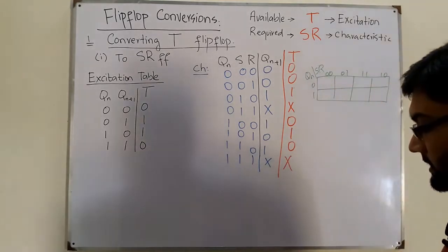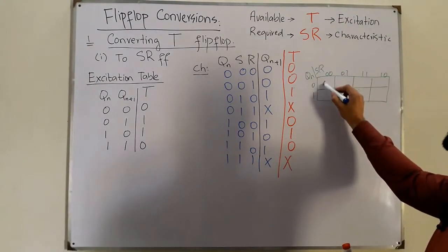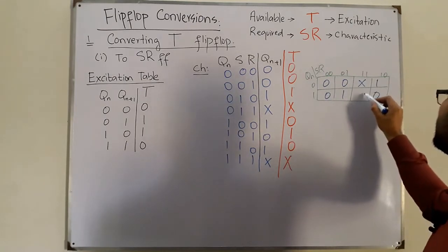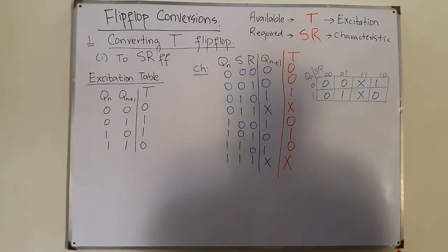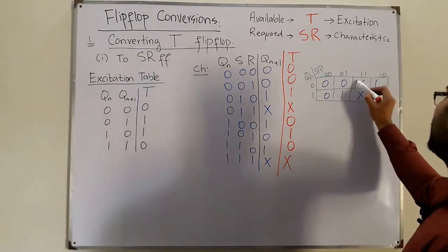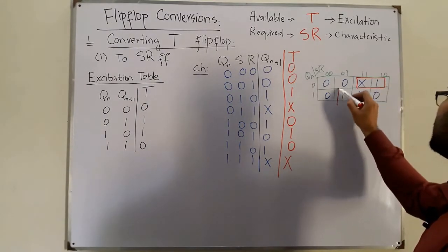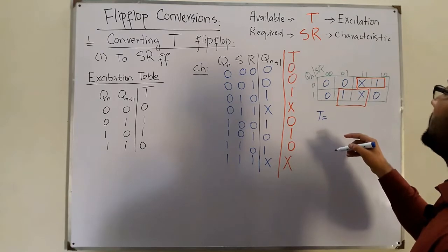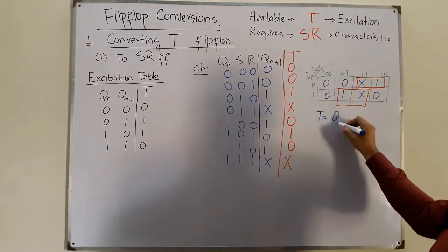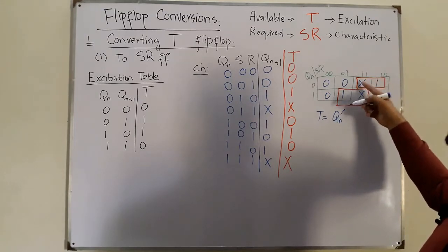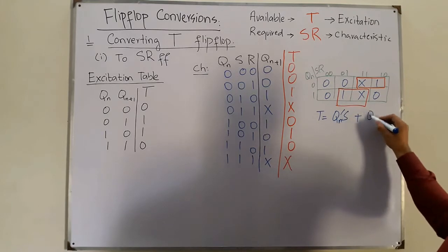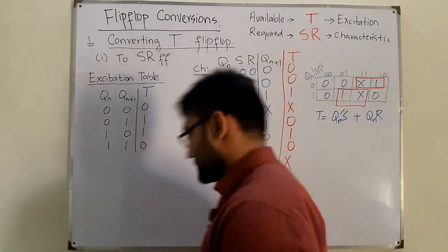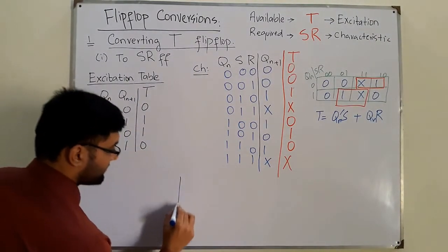Filling the K-map: 0, 0, 1, don't care, 0, 0, 1, don't care, 0, 1, 0, don't care. We can form two groups. The first group gives Qn-complement · S, and the second group gives Qn · R. So T = Qn'S + QnR.